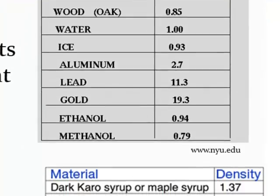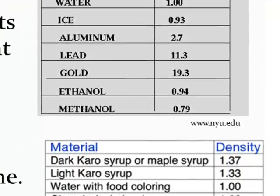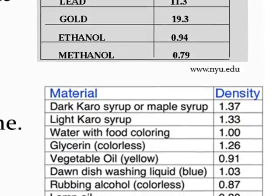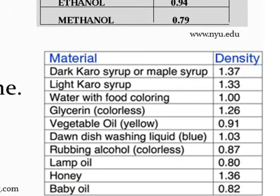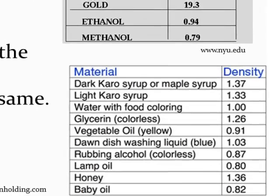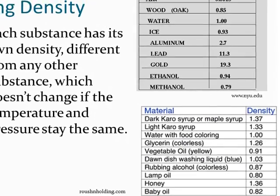The bottom table shows a variety of different substances that you might be able to find around your home or easily purchase, so that you could create something known as a density column, where you can see several different liquids added into a container that remain separated because of density differences. You could create a density column using some of these substances, which have different colors to make the column look nicer.